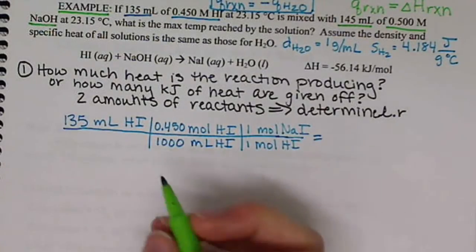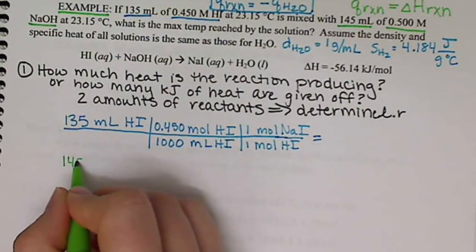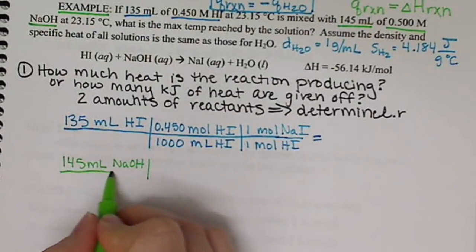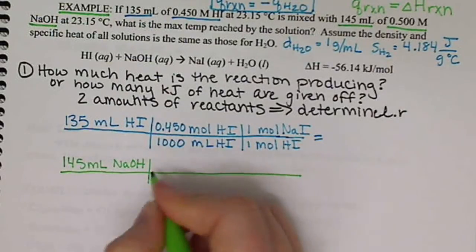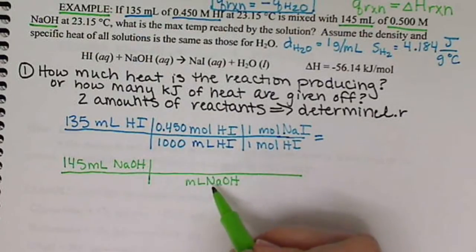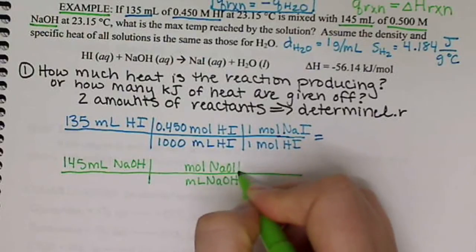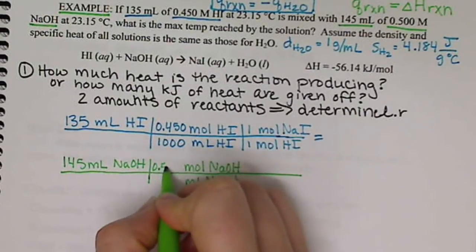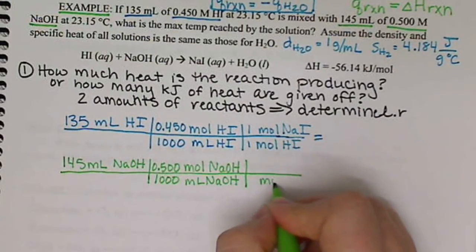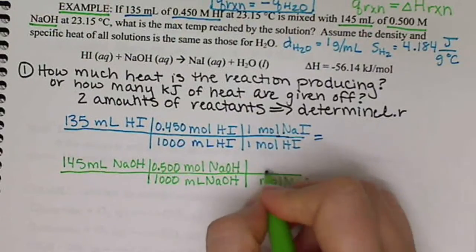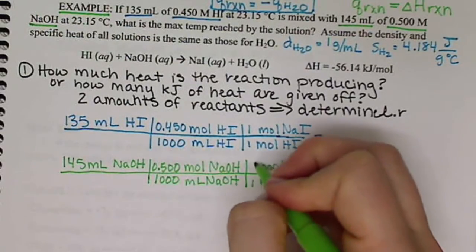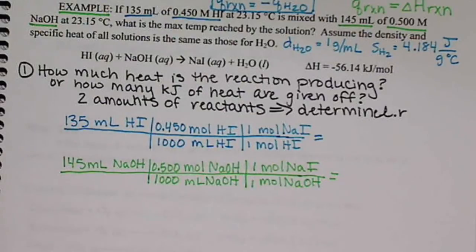I'll do the same setup with my 145 milliliters of sodium hydroxide. I want to figure out how many moles of sodium iodide I can produce. I convert from milliliters of NaOH to moles of NaOH using the molarity: 0.500 moles per 1,000 milliliters. Then I go from moles of sodium hydroxide to moles of sodium iodide, which is also a 1-to-1 ratio.